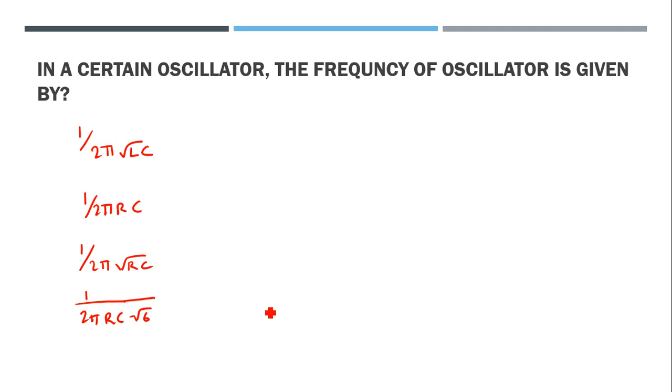Next question: In certain oscillators, the frequency of oscillator is given by - you can choose one by 2 pi RC times root of 6 as the answer. Other options are one by 2 pi RC and one by 2 pi root of RC, which are just dummies.